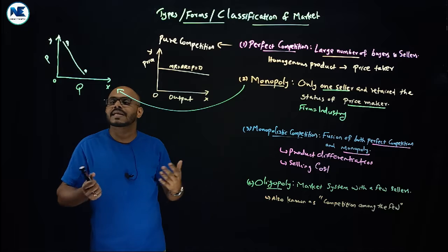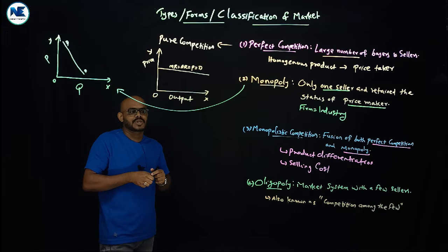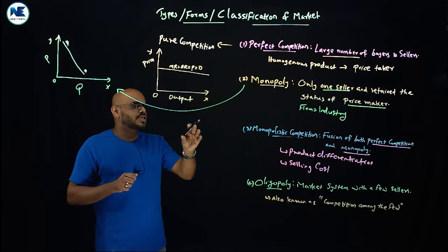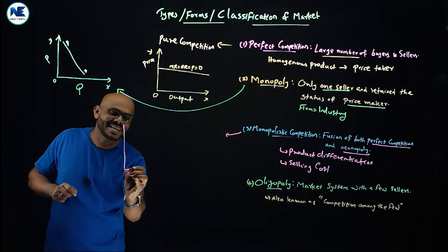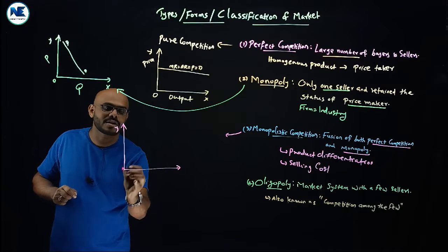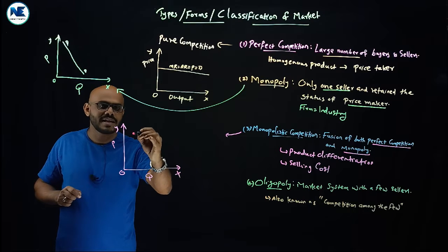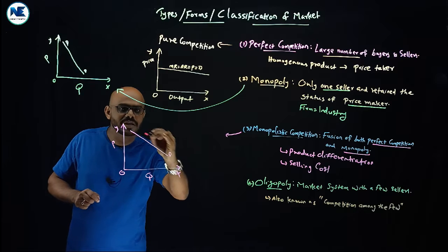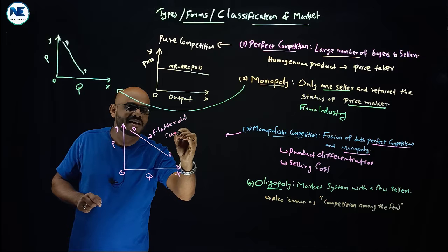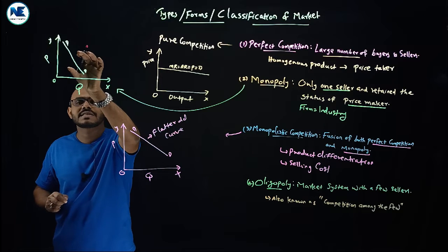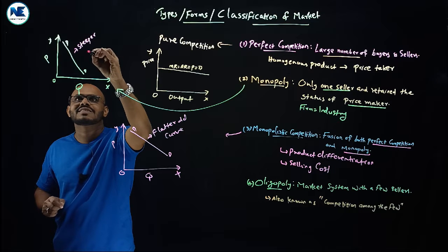Economists Mrs. Joan Robinson and Chamberlin developed concepts for monopolistic competition, including the long-run equilibrium and group equilibrium concepts by Chamberlin. Regarding the demand curve in monopolistic competition: it is downward sloping, but more flatter in shape compared to monopoly. Under monopolistic competition the demand curve is more flat, while under monopoly the demand curve is more steep.